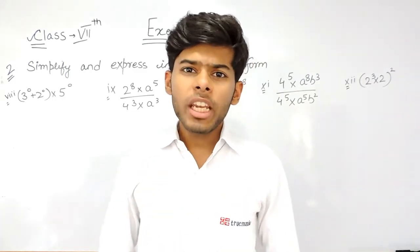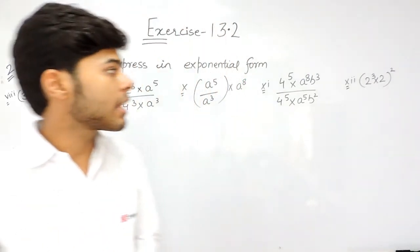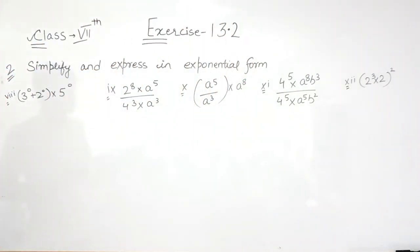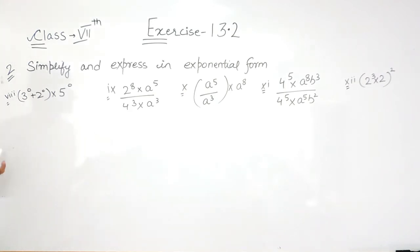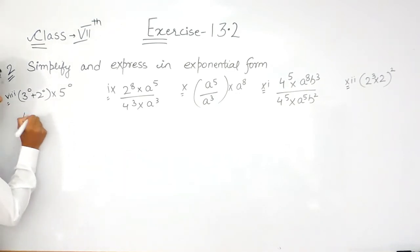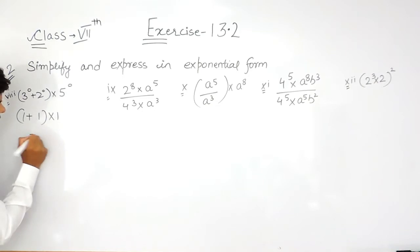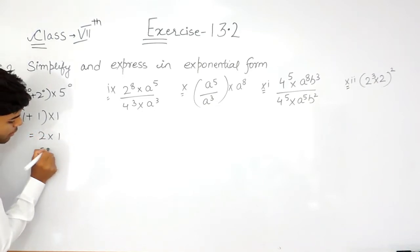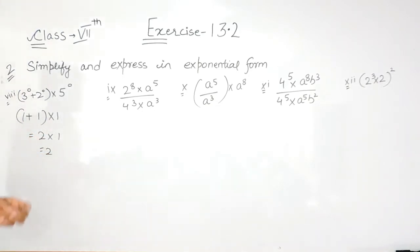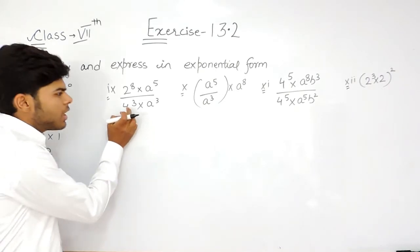Hello everyone. In this video we will solve the remaining 5 parts of question number 2 of exercise 13.2. Here also we have to simplify them and express them in exponential form. As you know, anything raised to the power 0 is equal to 1, so this will be 1 plus 1 multiplied with 1, so that will be 2 multiplied with 1, and the answer is 2.